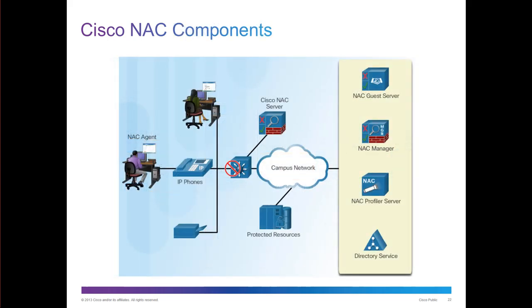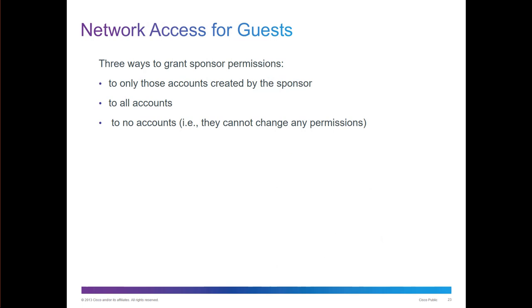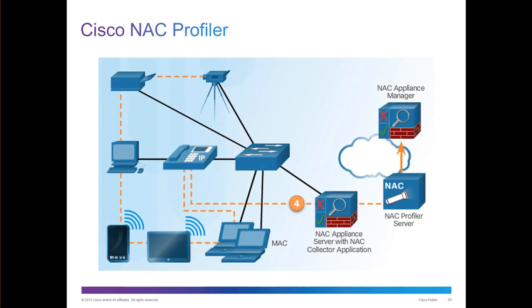NAC components include the NAC guest server, the NAC manager, the profile server, and typically some type of directory service to authenticate against. The manager manages, and the profiler pushes out the profiles for configuration. You can also have network access for guests — through a grant sponsor, permissions can be granted to only accounts created by the sponsor, to all accounts, or to no accounts. The Cisco NAC profiler should be in direct communication with the appliance manager and the NAC collector application to review profiles and verify access.